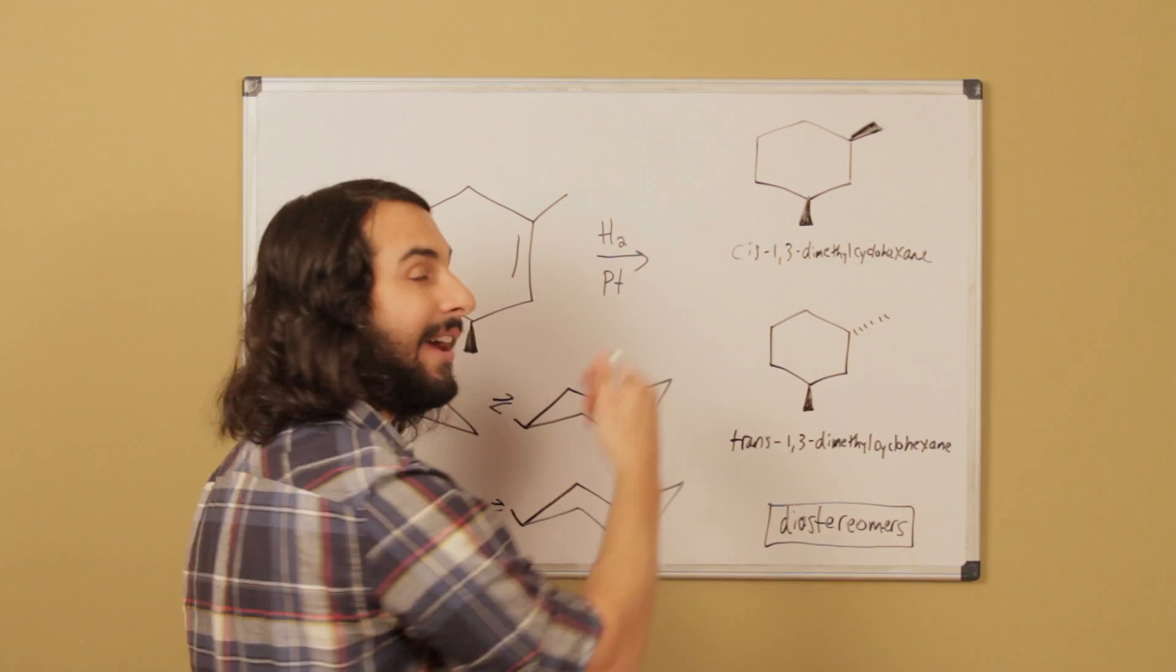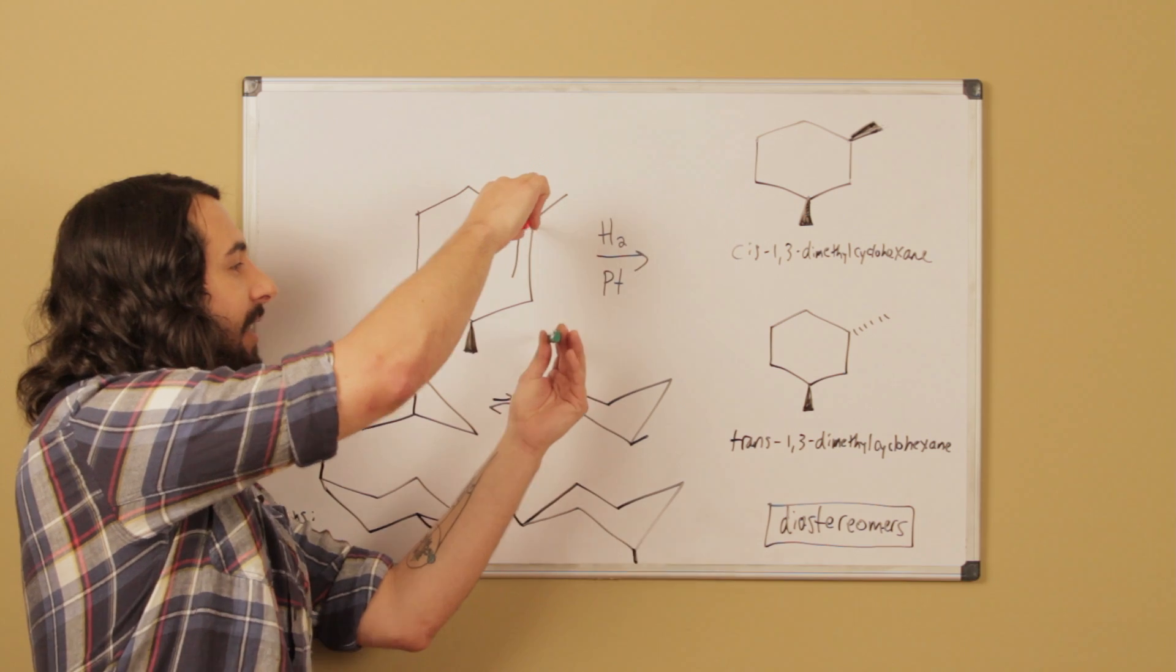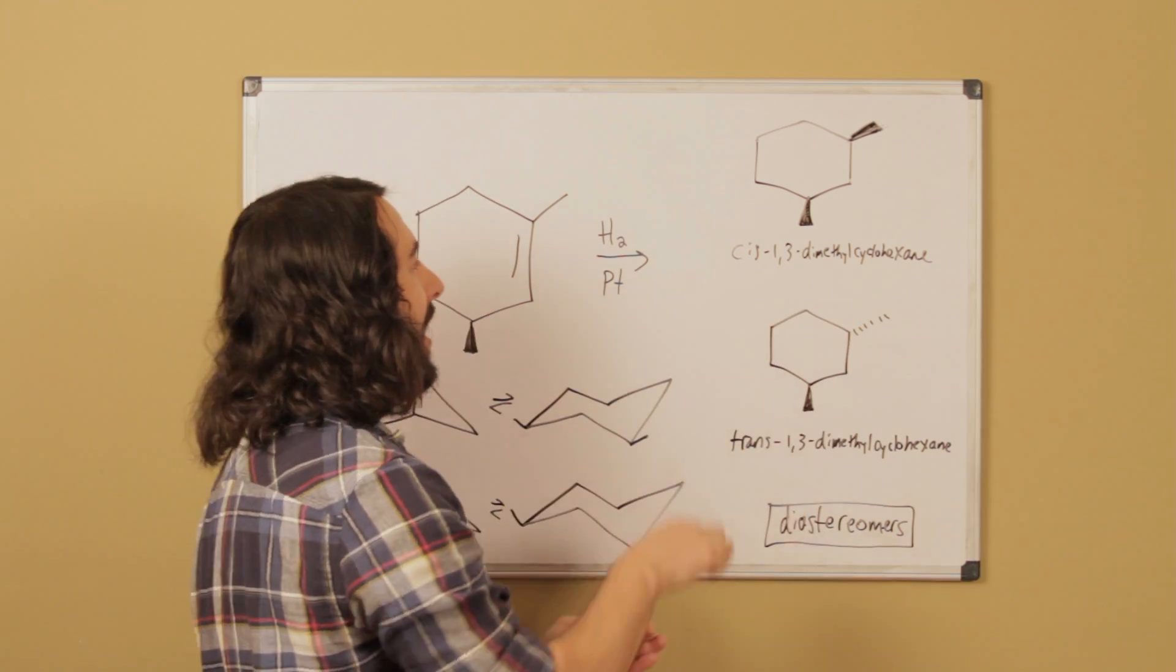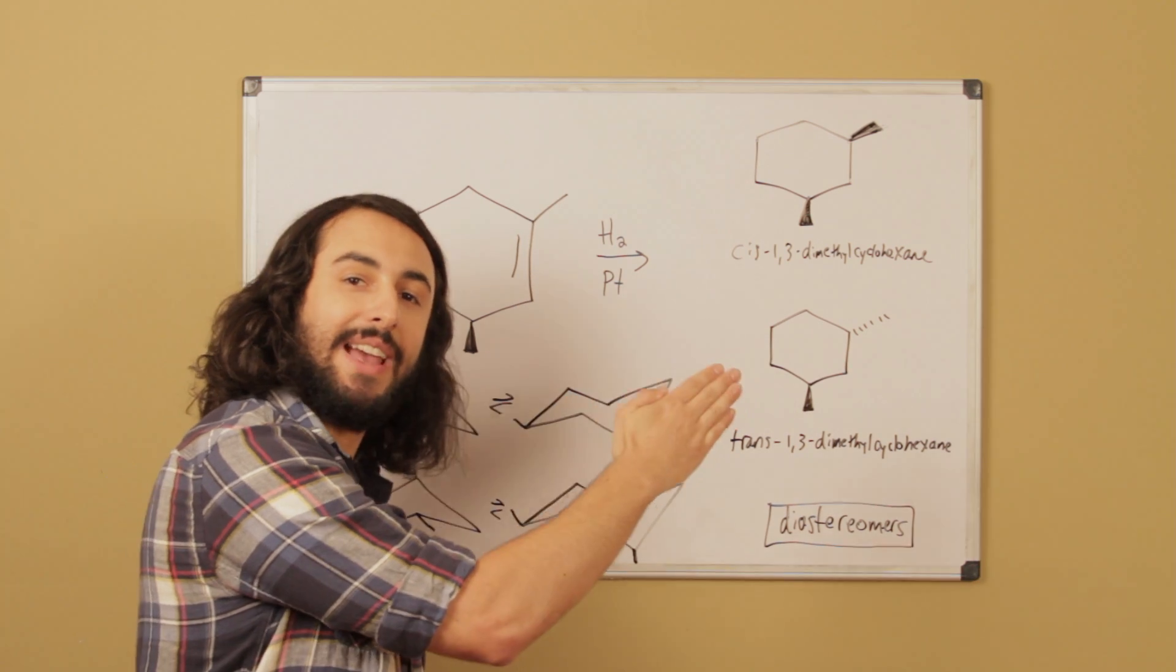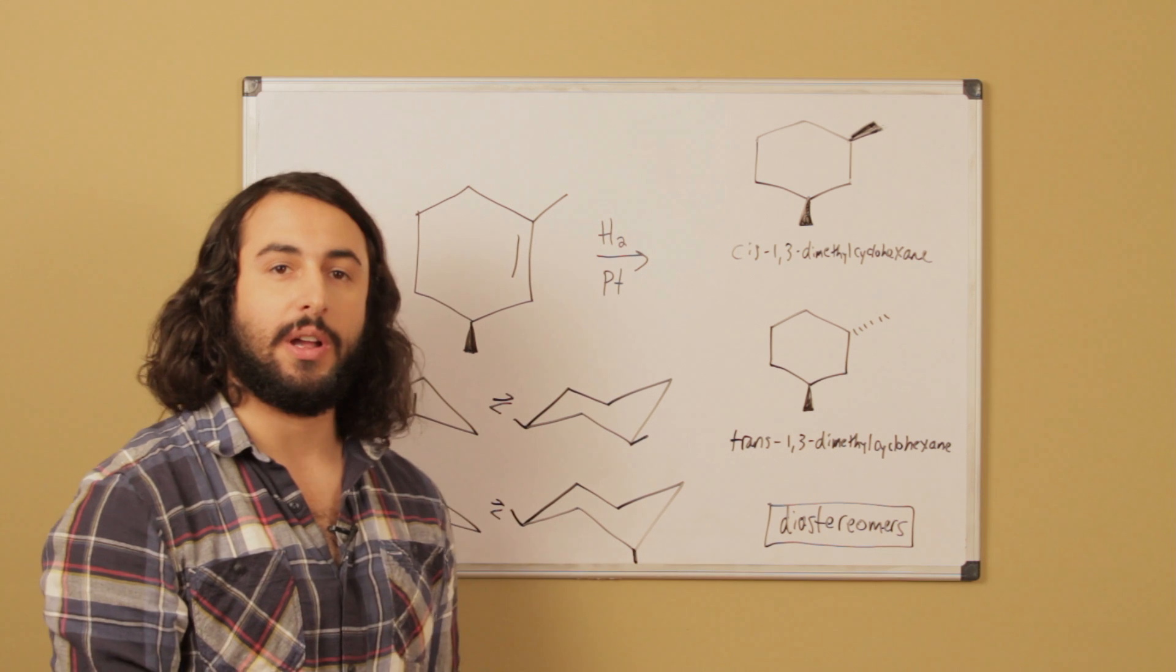The other option is if they were added from this side of the molecule. That means the implied hydrogens would both be wedges right there, and that means the existing methyl had to get pushed back. Here are the two resulting compounds.